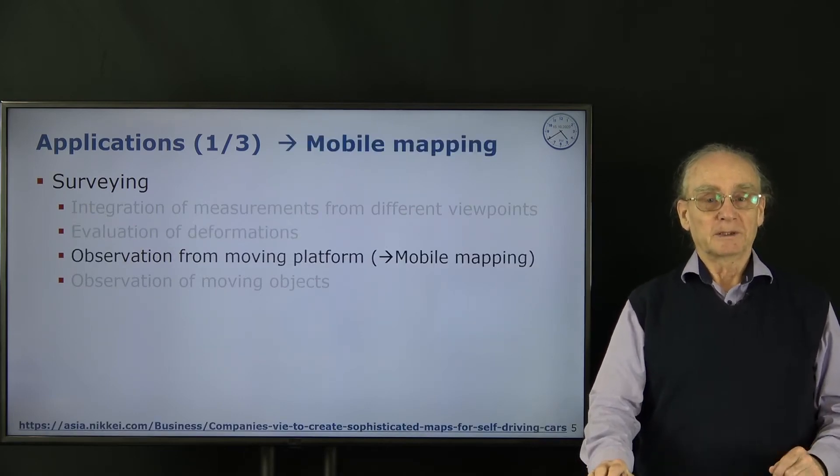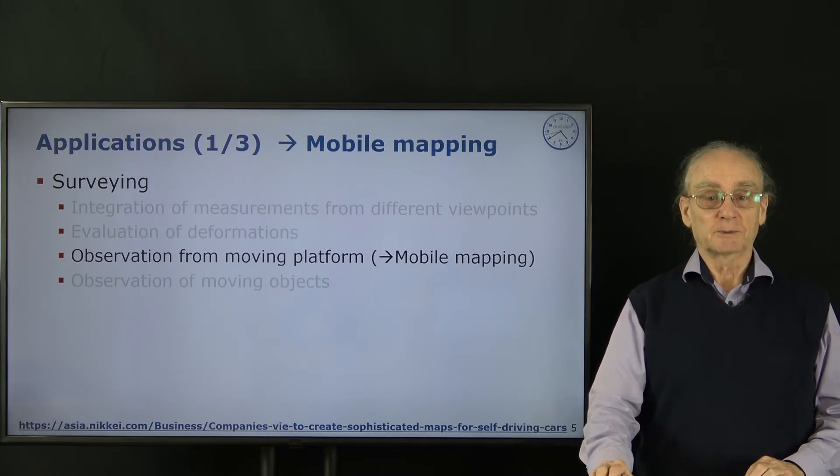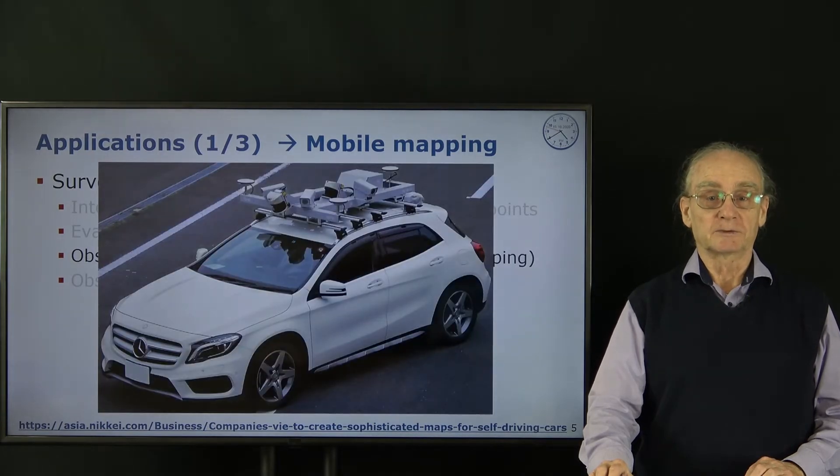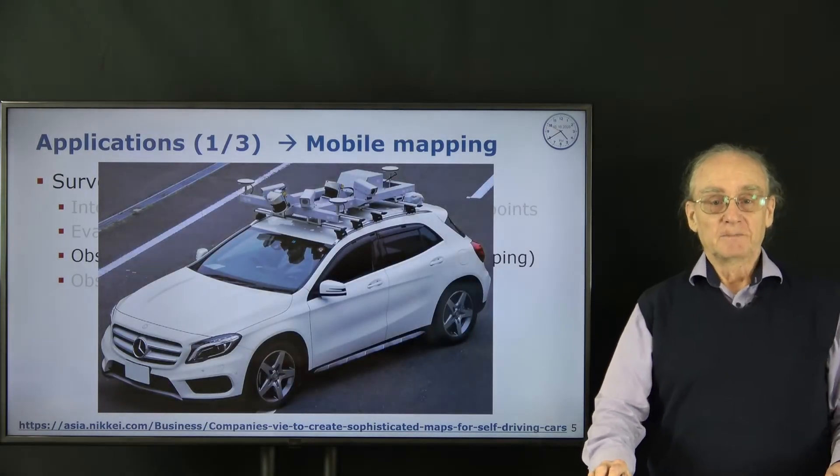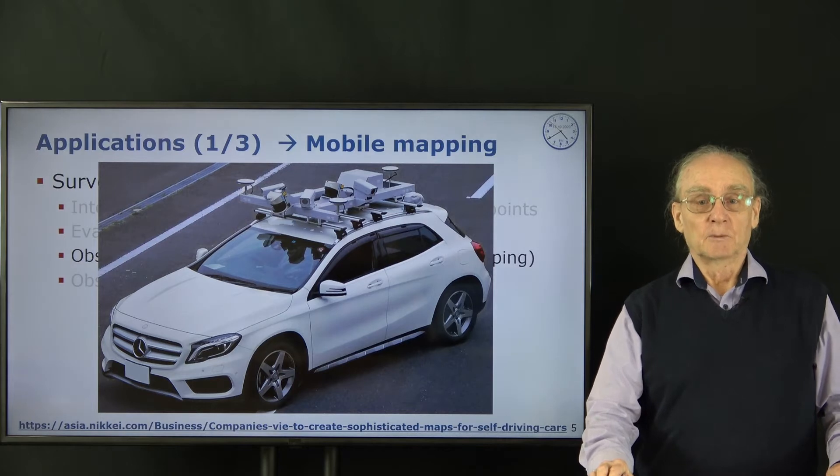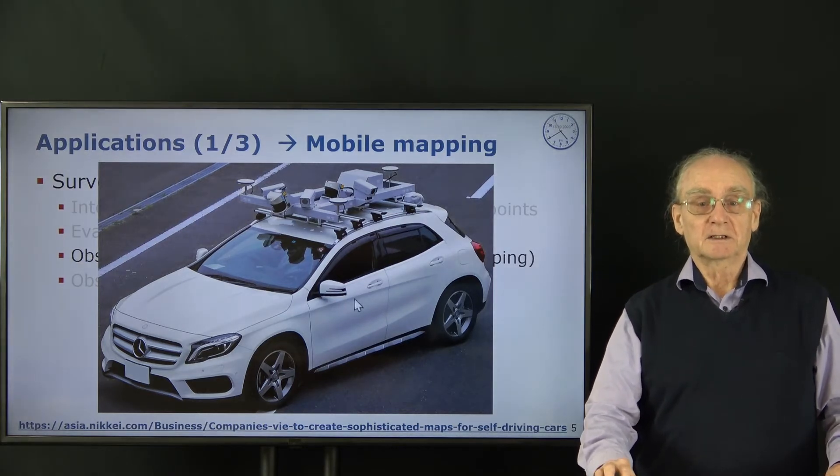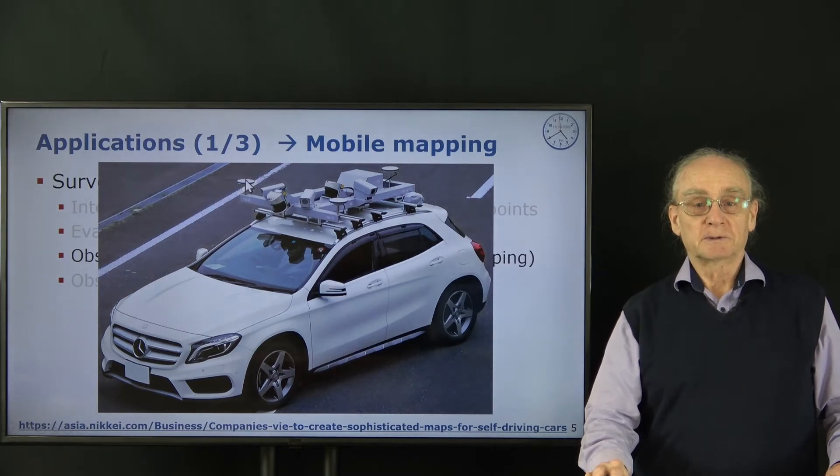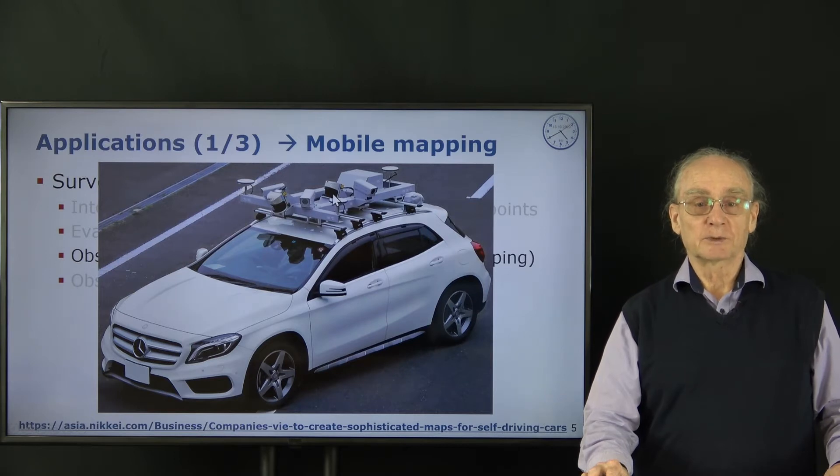I already mentioned mobile mapping. We have moving platforms and we would like to know how to evaluate the data from these mobile platforms. Here you see an example, a classical mobile mapping system. You have here this car with several sensors. You have several GPS antennas, three I see. Then we have two lasers which measure the distances to the objects, so we have a very dense point cloud. And we have several cameras in order to interpret the data.